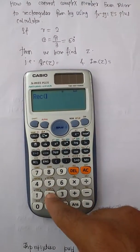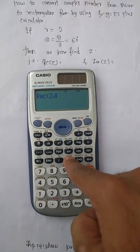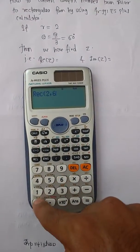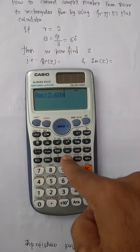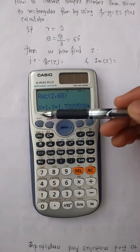Then substitute the values of R and theta. Here R is 2, just put the value of 2, then generate a comma, then put the value of theta, that is 60 degrees. Just complete your bracket and press equal button.